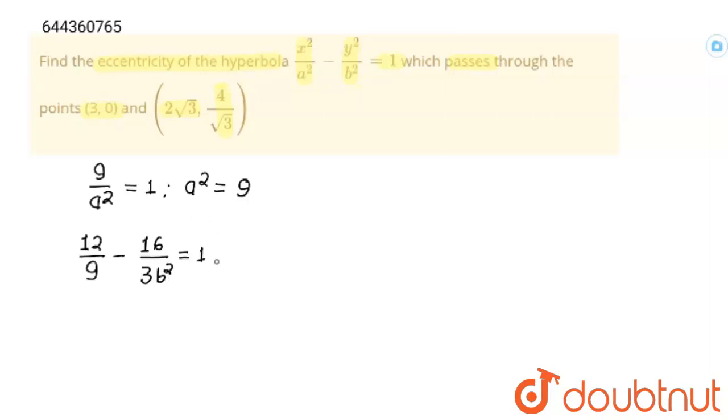I am going to bring 1 to this side and minus 16/(3b²) to LHS. This will become 12/9 - 1 = 16/(3b²).